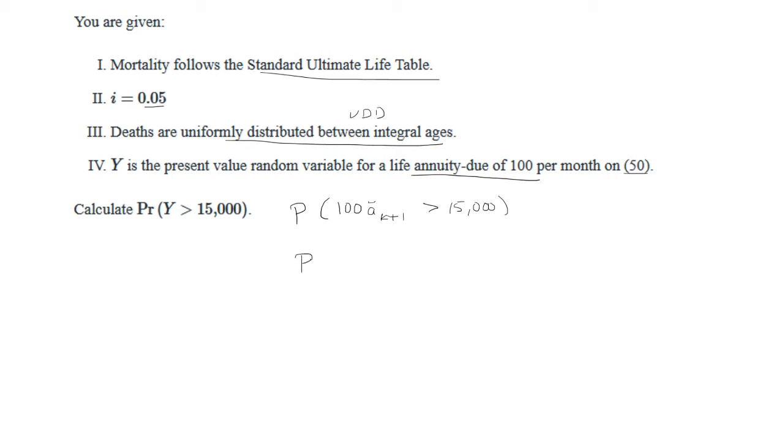If I divide both sides by 100 I get 150 on the right side, and again this is a monthly annuity due.